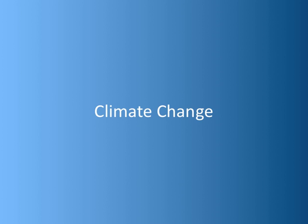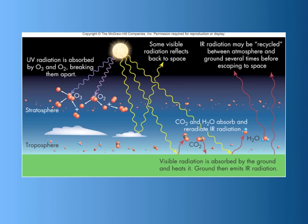Let's discuss a relevant topic in today's world: climate change. To review, the greenhouse effect involves the trapping of radiation by the action of greenhouse gases such as carbon dioxide and water. These gases allow sunlight to penetrate to the surface of the Earth, but keep a certain amount of that radiation trapped near the surface, effectively warming the surface temperature.